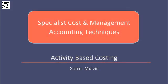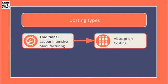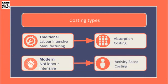This presentation covers the management accounting technique of activity-based costing. Traditionally, manufacturing was labour intensive, so it made sense to trace overheads to products or to absorb based on the number of labour hours worked or the number of units produced. Absorption costing was used for this. Activity-based costing is an alternative to absorption costing, recognising that today manufacturing is no longer labour intensive and looks for new ways to trace overheads to products.